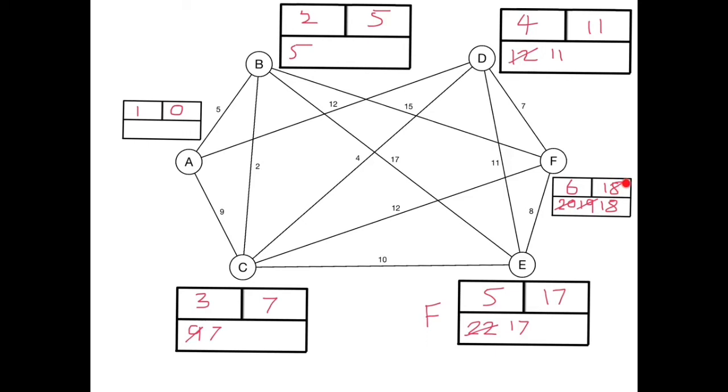Now you may be able to remember some of these but it's a good idea to check. 18 minus 8 is not the permanent label here, 17, so it's not that one. Similarly 18 minus 12 is not 7.